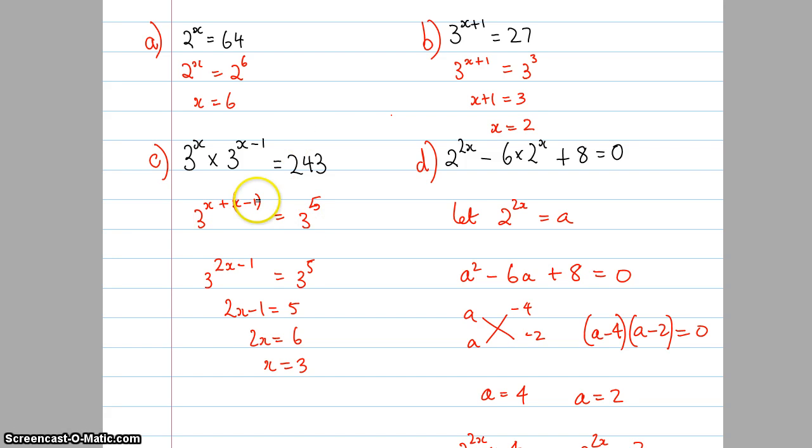So once I've got that, I can add these two things together. So x plus x is 2x minus 1. So therefore, 2x minus 1 must equal 5. And we can find out that x equals 3. If you're worried about the solution, chuck it back up into the equation. 3 to the power of 3 multiplied by 3 to the power of 2 is 3 to the power of 5, which all works.